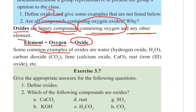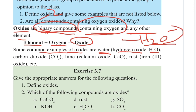Some common examples of oxides are water — water is hydrogen oxide, chemical formula H2O. Carbon dioxide is also an oxide. Calcium oxide has the chemical formula CaO. Oxide defines a binary compound containing a certain amount of element and oxygen.